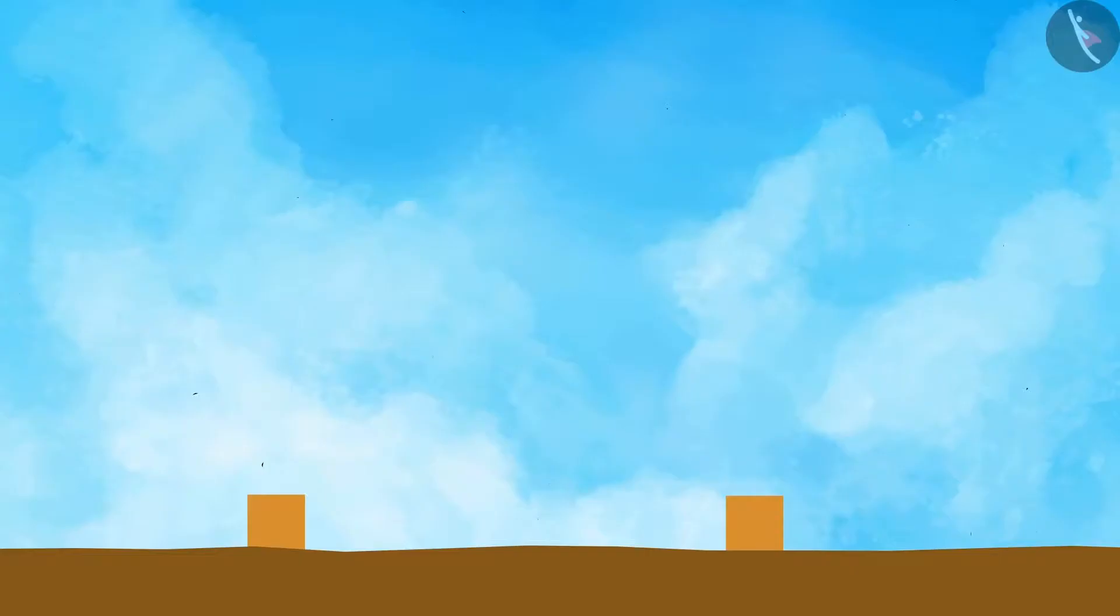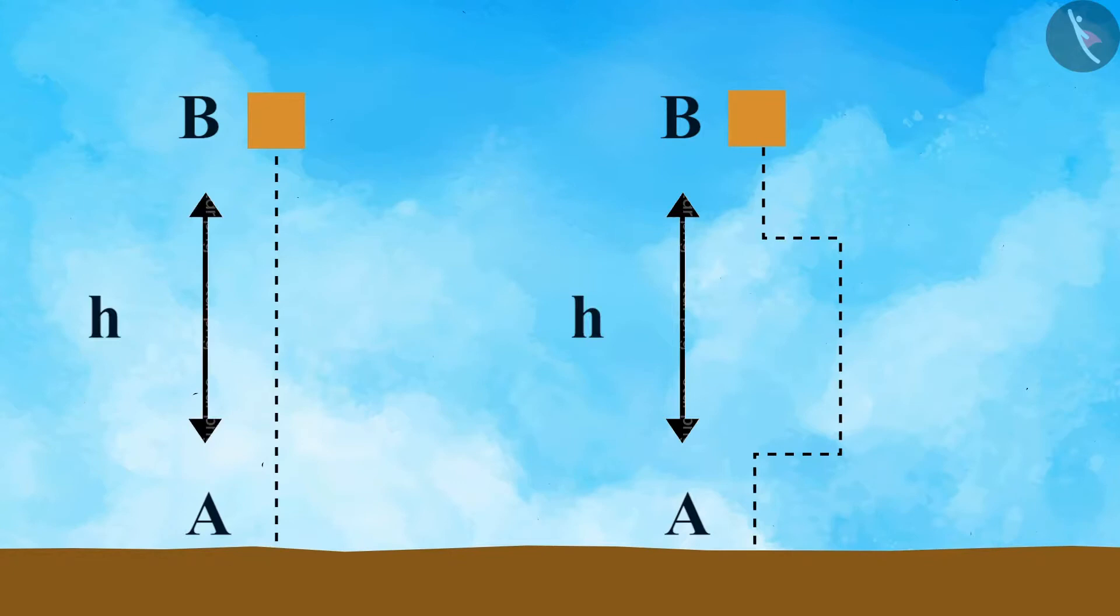Take a look at these two images, where two objects take two separate paths to reach from position A to position B. Here, AB is equal to H. In both the cases, the work done on both the objects is MgH.